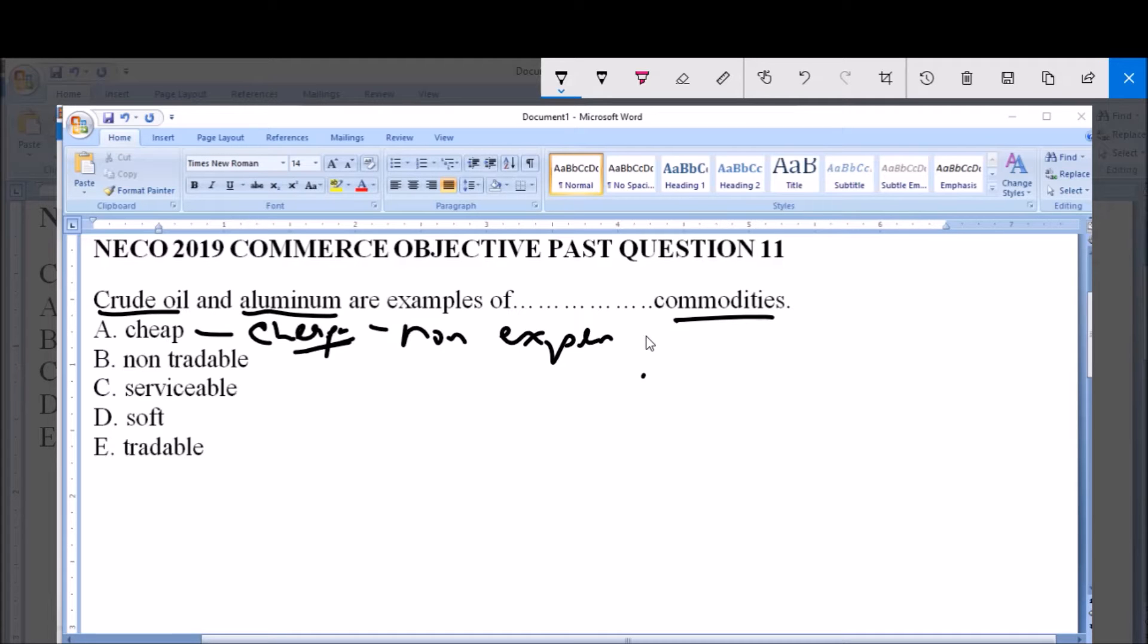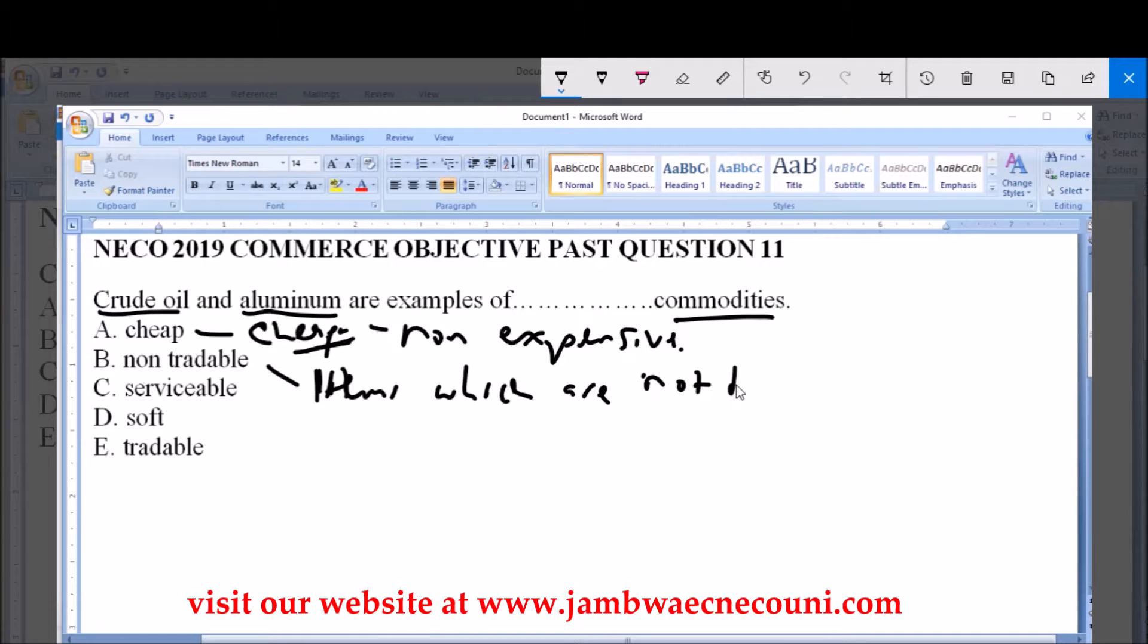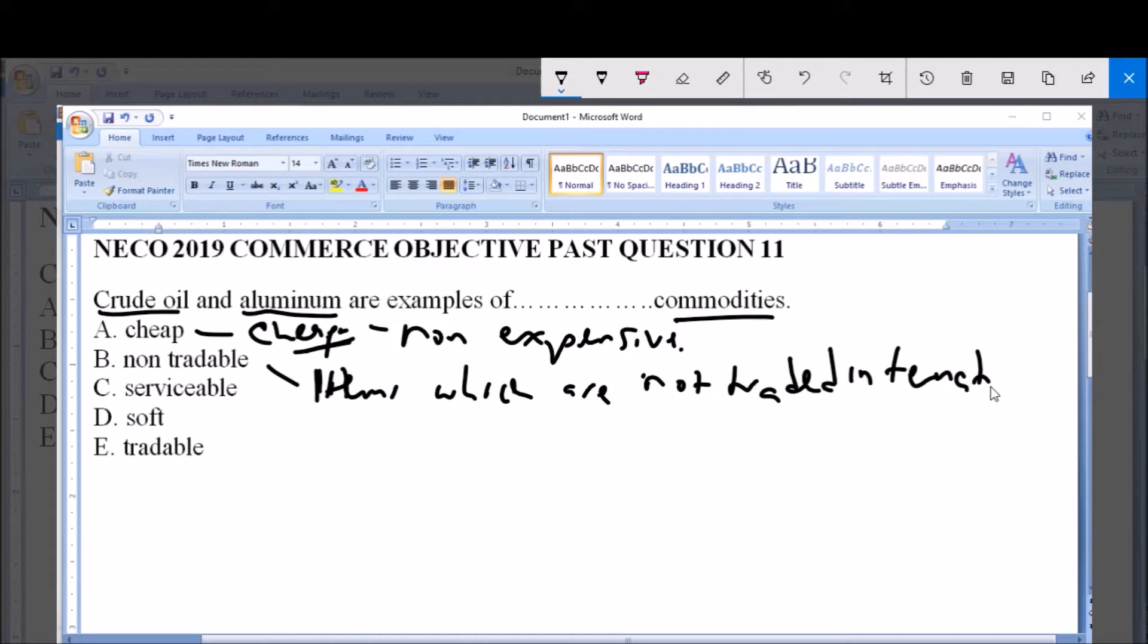Now, option B, which is non-tradable commodities. This refers to commodities or items which are not traded internationally. Examples include services where the producer and the person demanding, the demander, must be in the same location.